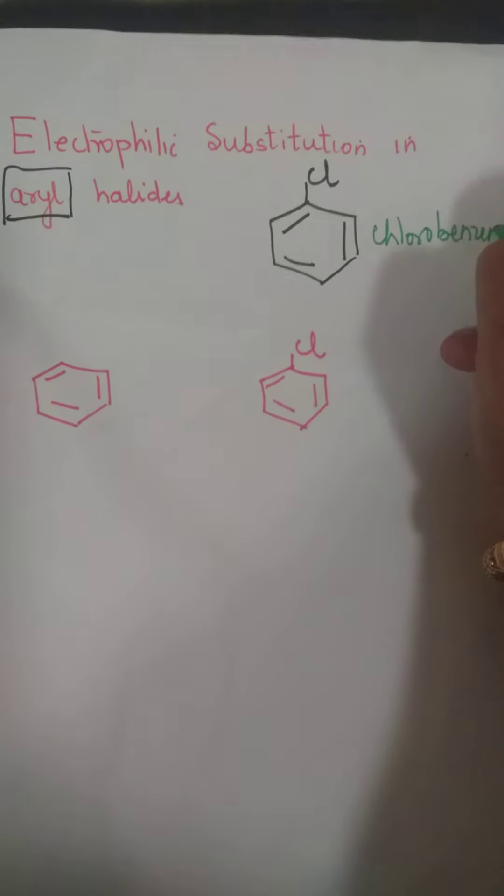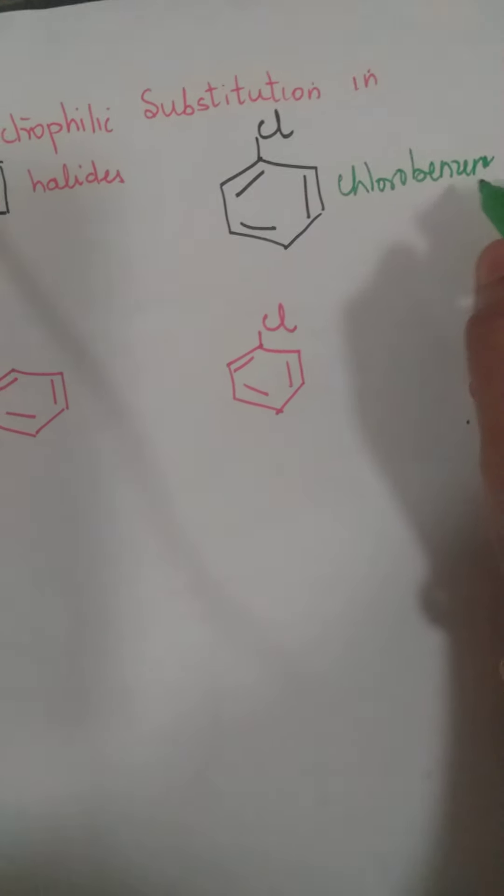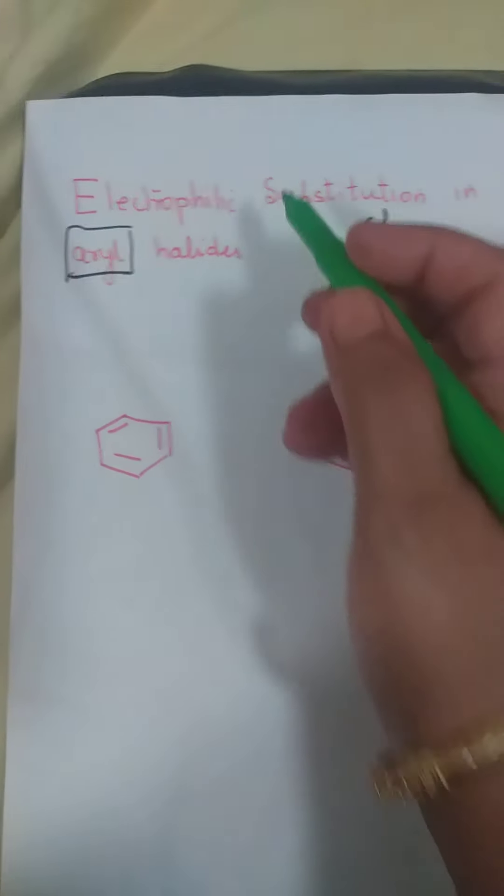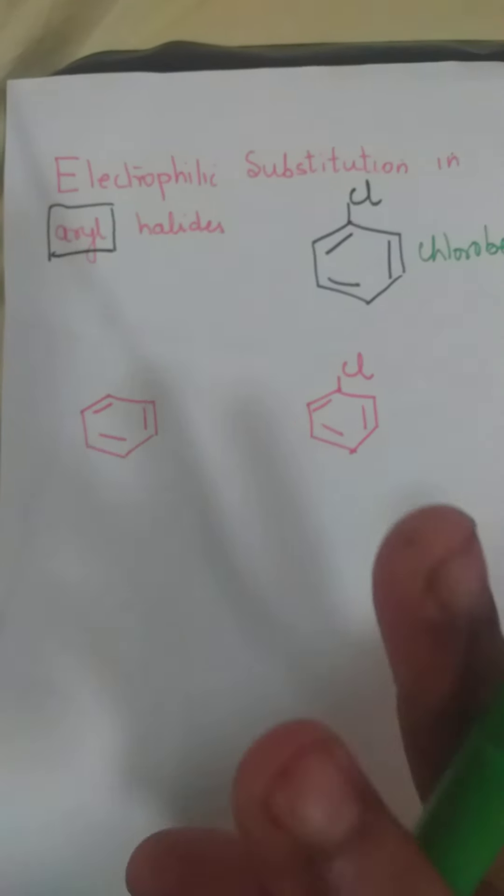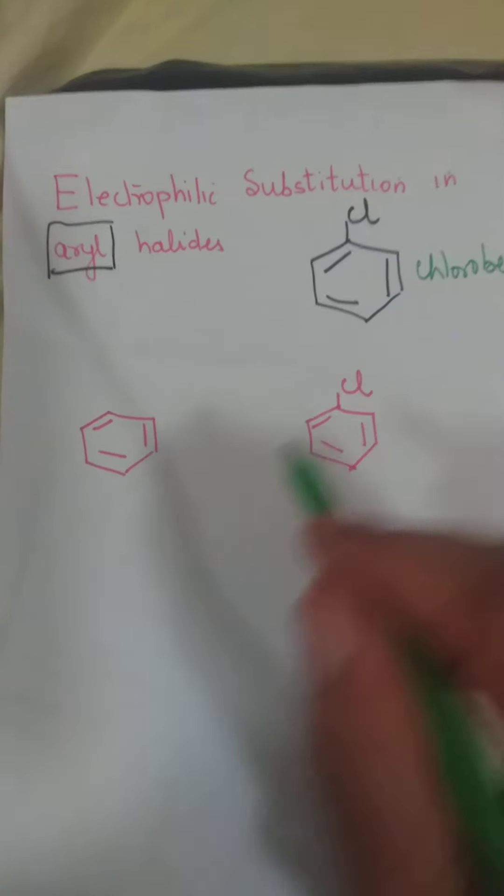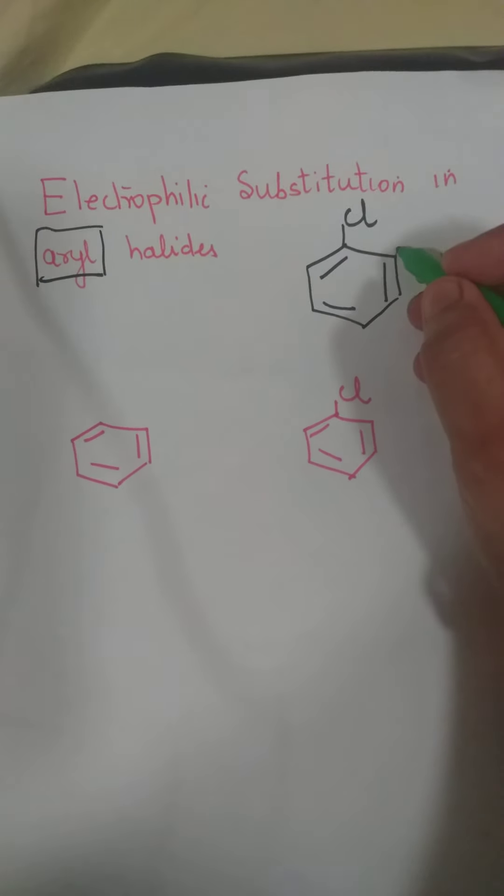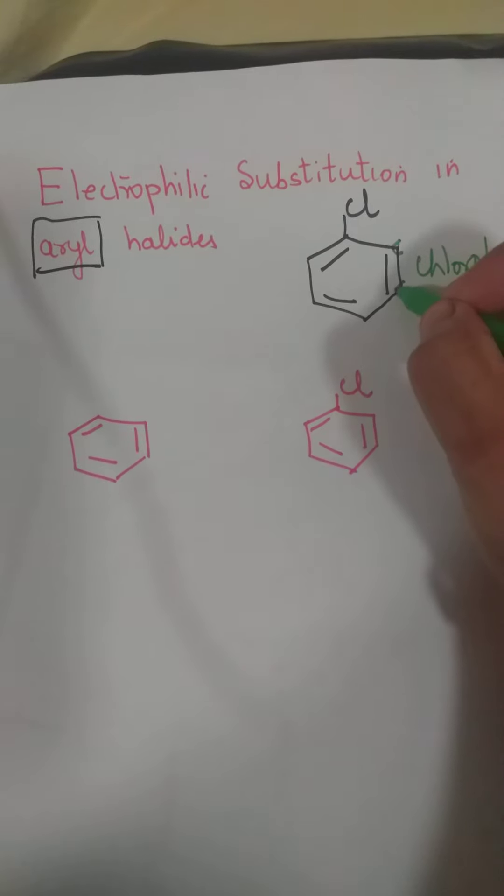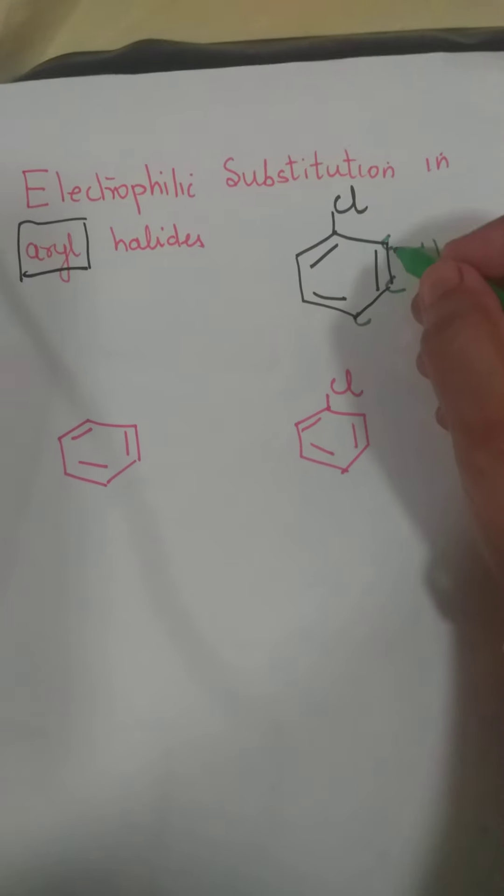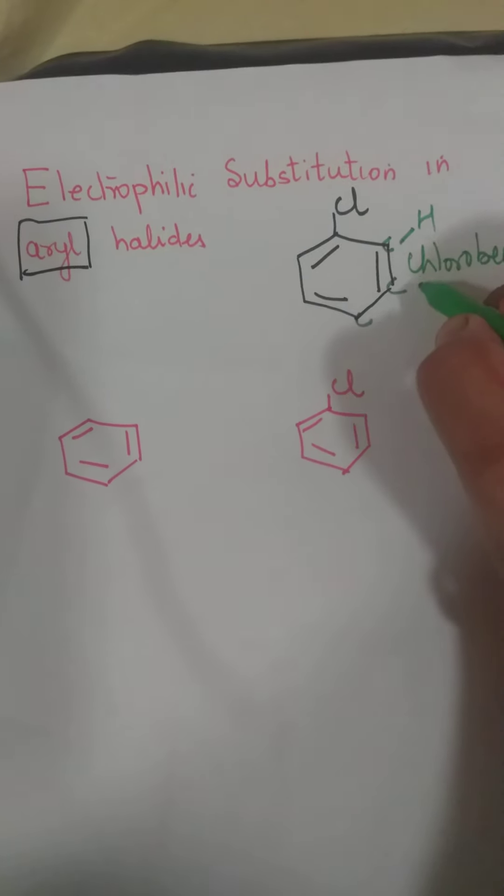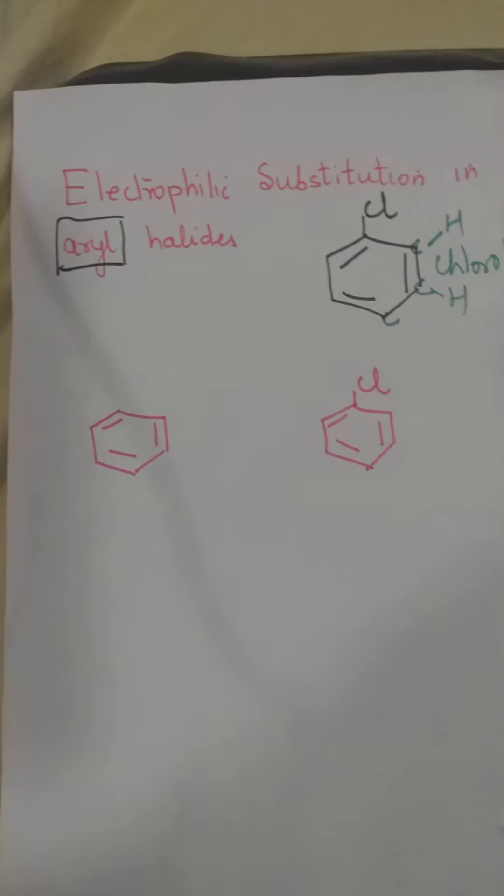Chlorobenzene. Ab, hamara problem yeh hai, we want to know what does first of all meant by electrophilic substitution. Sabse pehle toh woh define karna hai. Yahan pe aapko yaad rakhna hai ki benzene ka koi bhi ring pe, har vertex pe there is a carbon. And attached to that carbon is a hydrogen.